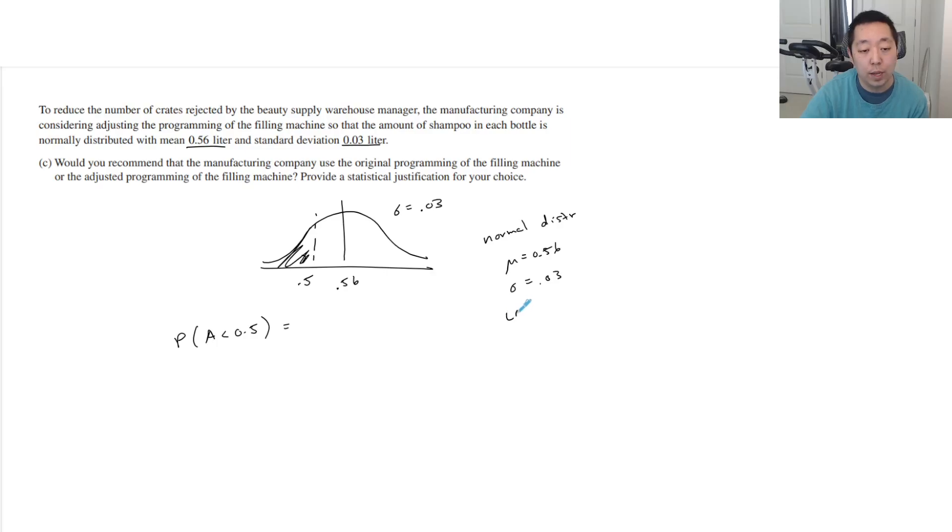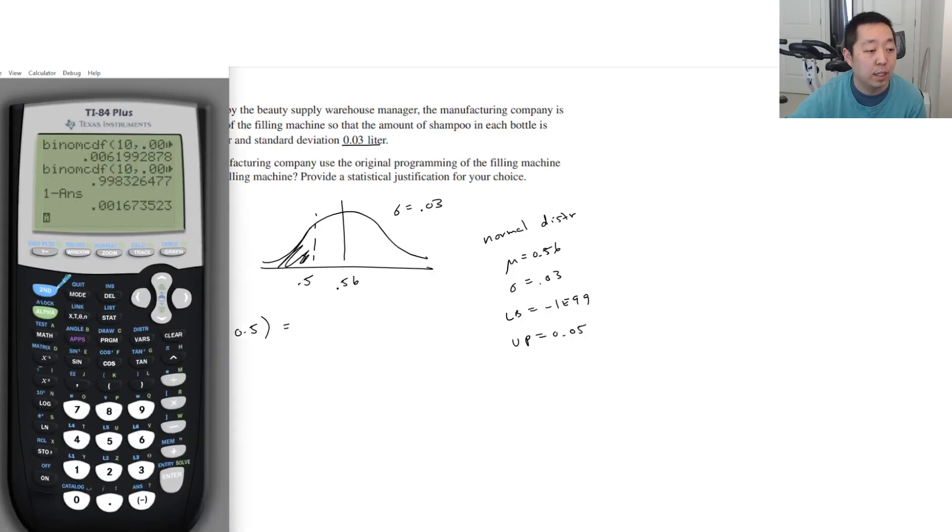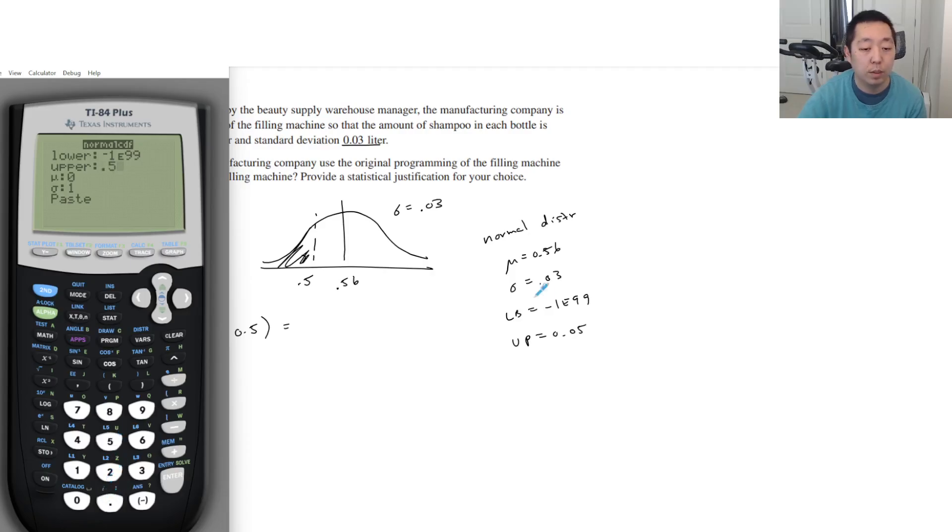Now we're going to say lower is that, upper is 0.5, mean is 0.56, and standard deviation is 0.03. Now why are we doing this? Because if this probability is greater, then we're going to have a problem. So this is 0.0228.